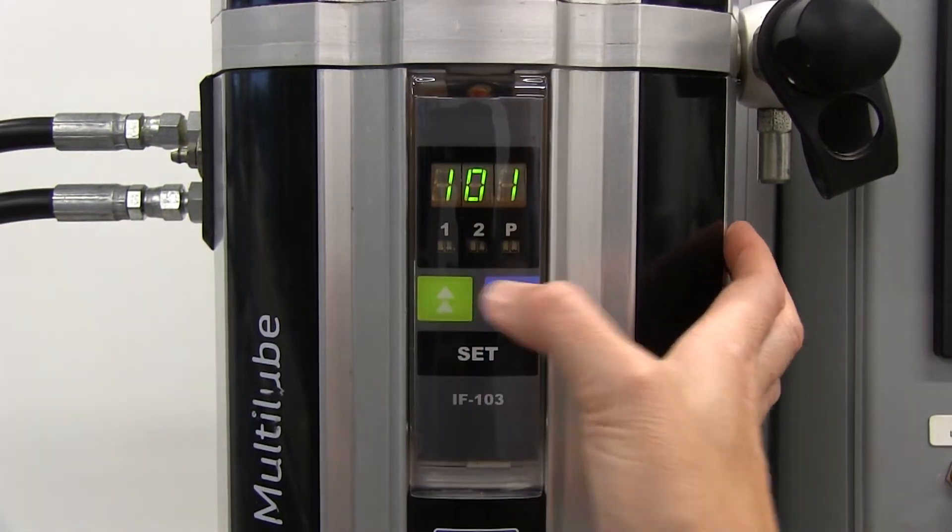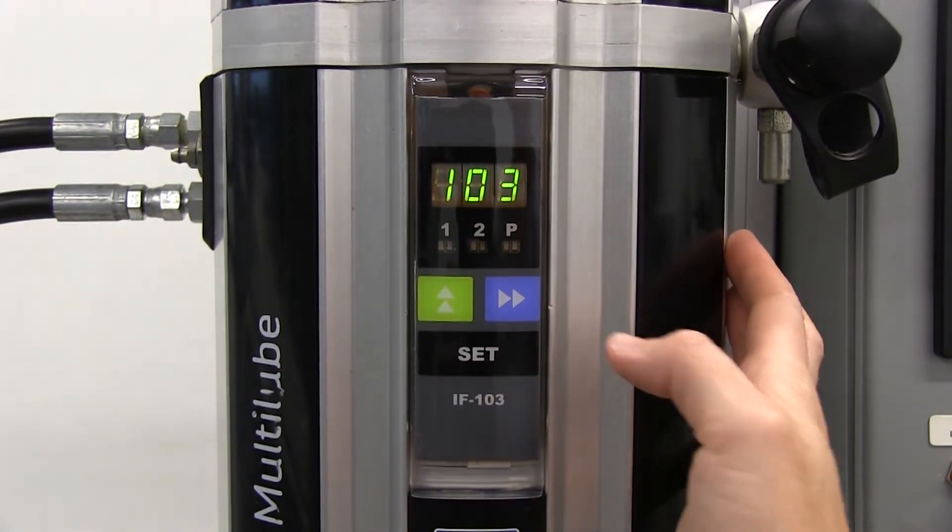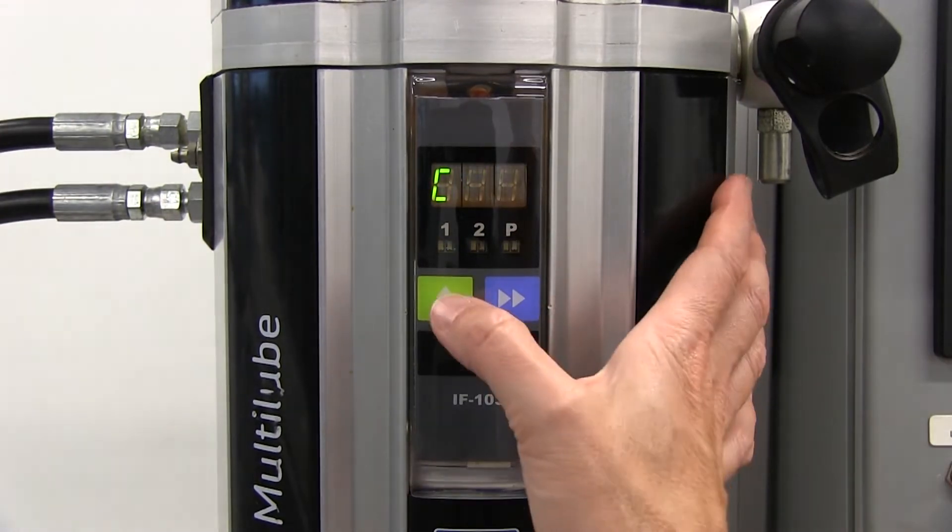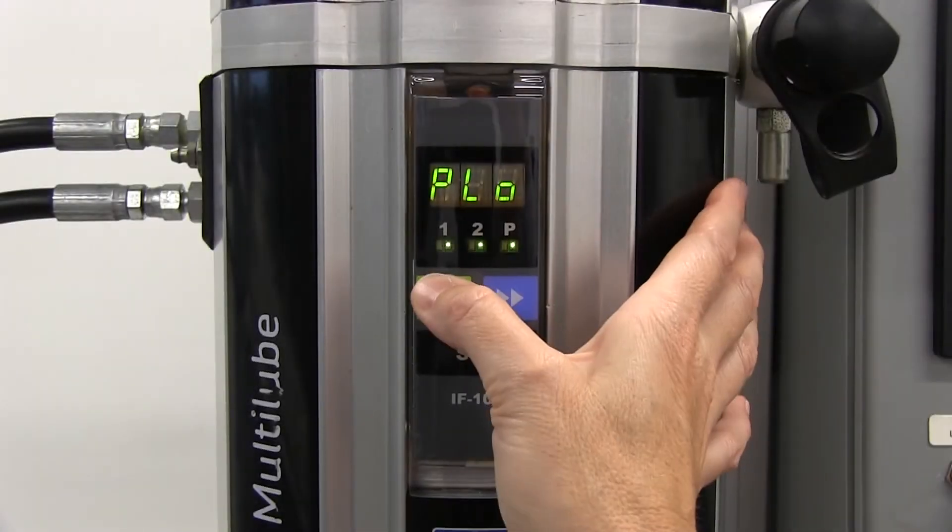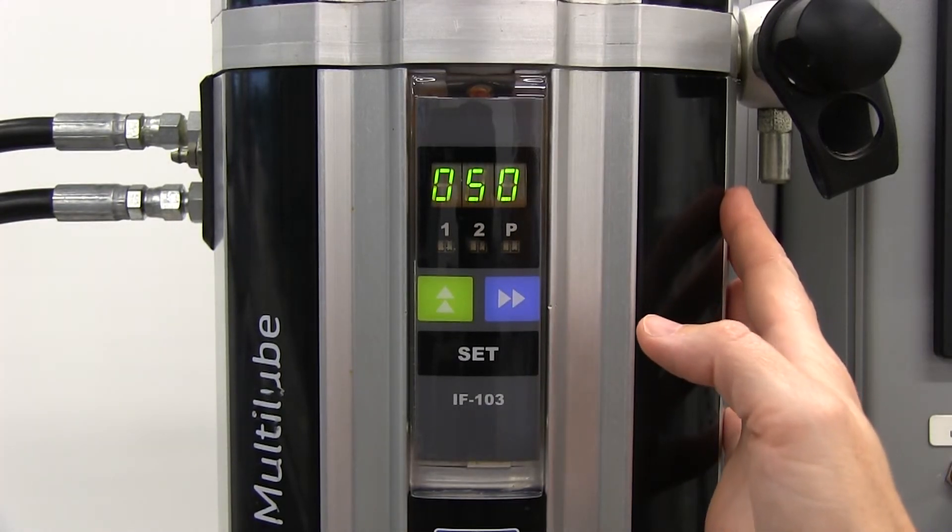Once you have successfully entered the password, use the green up arrow button to navigate to the parameter to be changed. Note that scrolling past the last parameter exits you from programming mode.